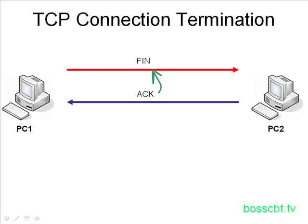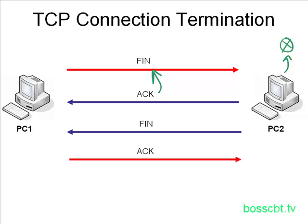Before PC2 does anything else, TCP internally notifies the application associated with this session — TCP uses port numbers to identify applications — so TCP notifies the application that PC1 wants to close the session, enabling it to finish the conversation. Next, PC2 sends a FIN back to PC1, saying: I'm not going to be sending you any more data and I want to close this session as well. That's step three. Finally, step four: PC1 sends an ACK acknowledging PC2's FIN. At this point, the connection is terminated.